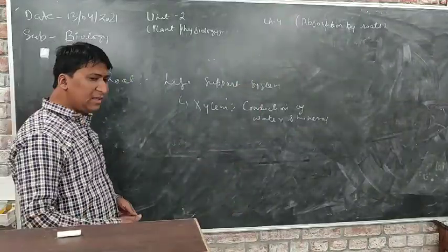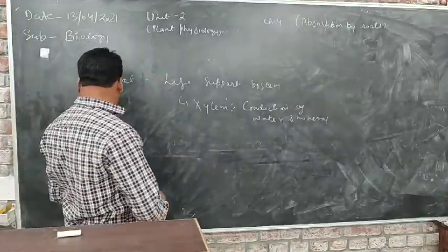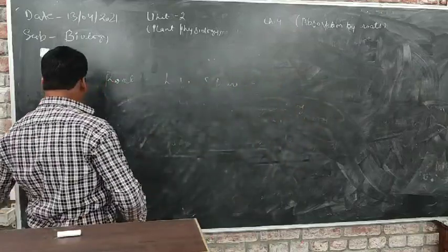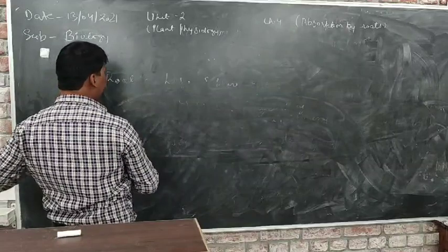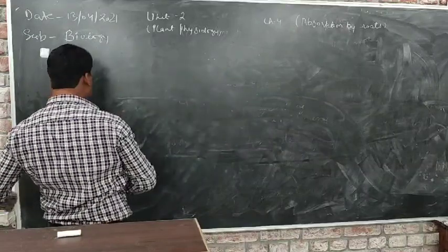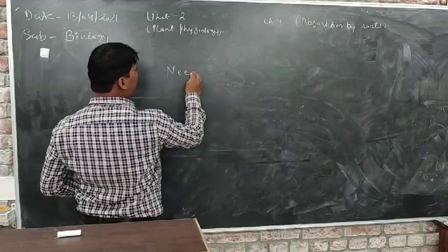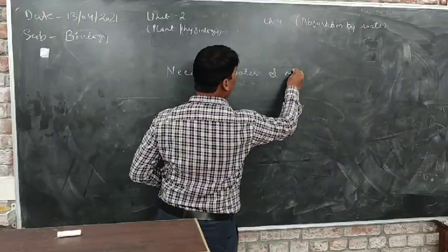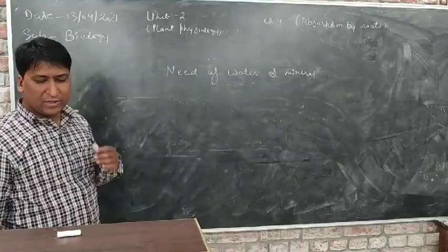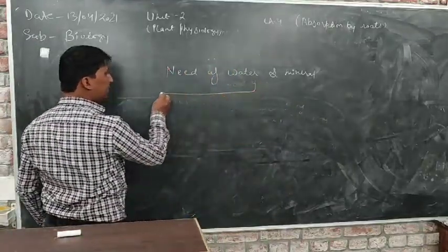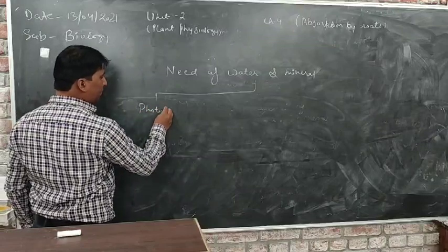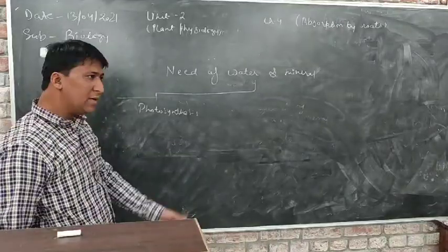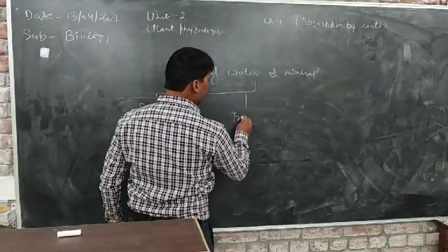This chapter deals with absorption done by the root. First, let's discuss why there is a requirement of water and minerals. Water and minerals are required for the following things: first is photosynthesis — the process by which plants make their food; second is transpiration; third is transportation; and the last one is mechanical stiffness. These are the four important points you have to remember about why the plant requires water and minerals.